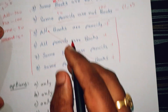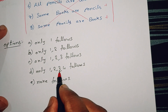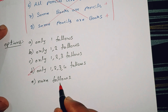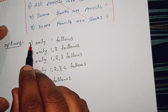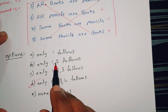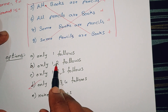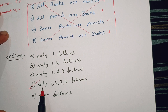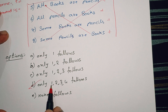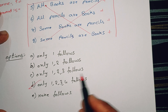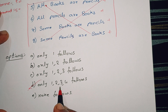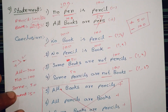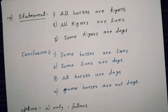So conclusions 1, 2, 3, 4 — only 1, 2, 3, 4. This is the correct answer. The first option is only one follows. Second option is 1 and 2 follow. Third option is 1, 2, 3 follow. So the third option: 1, 2, 3 follow. The D option is the correct answer. So this is the homework question. Now we have 3 statements.